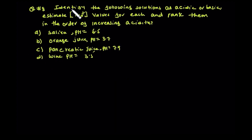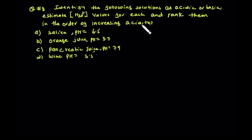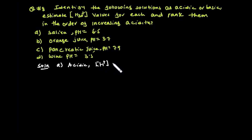Question: identify the following solutions as acidic or basic. Estimate the hydrogen ion concentration values and rank them in order of increasing acidity. A: the pH — 3.1 times 10 to the power of minus 7.